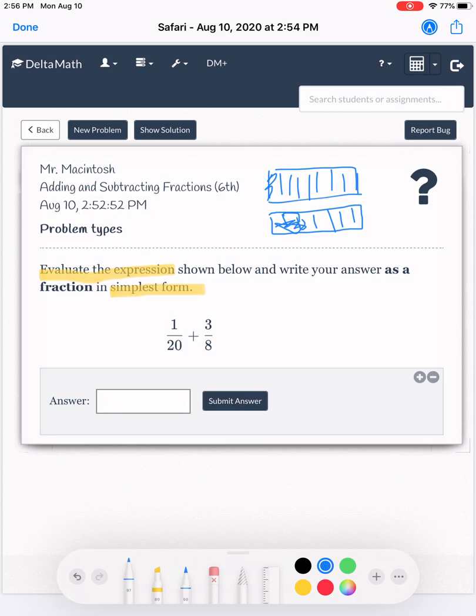So I'm going to go ahead and turn 1/20th into 40ths, so I can do that. So I know I got to multiply the top and bottom times 2, and I get 2/40ths.